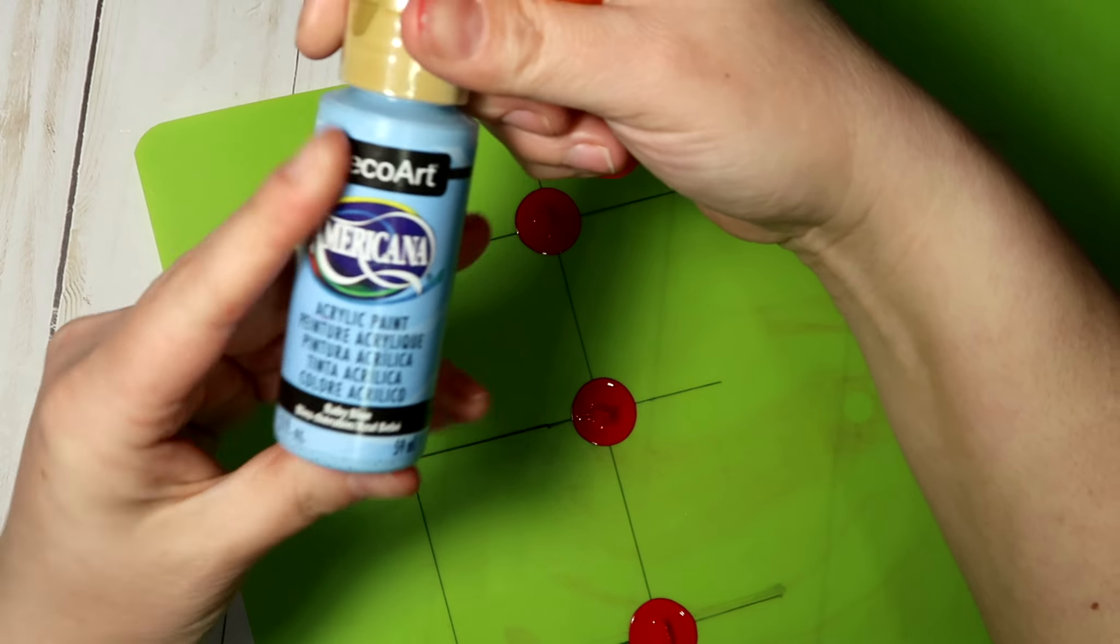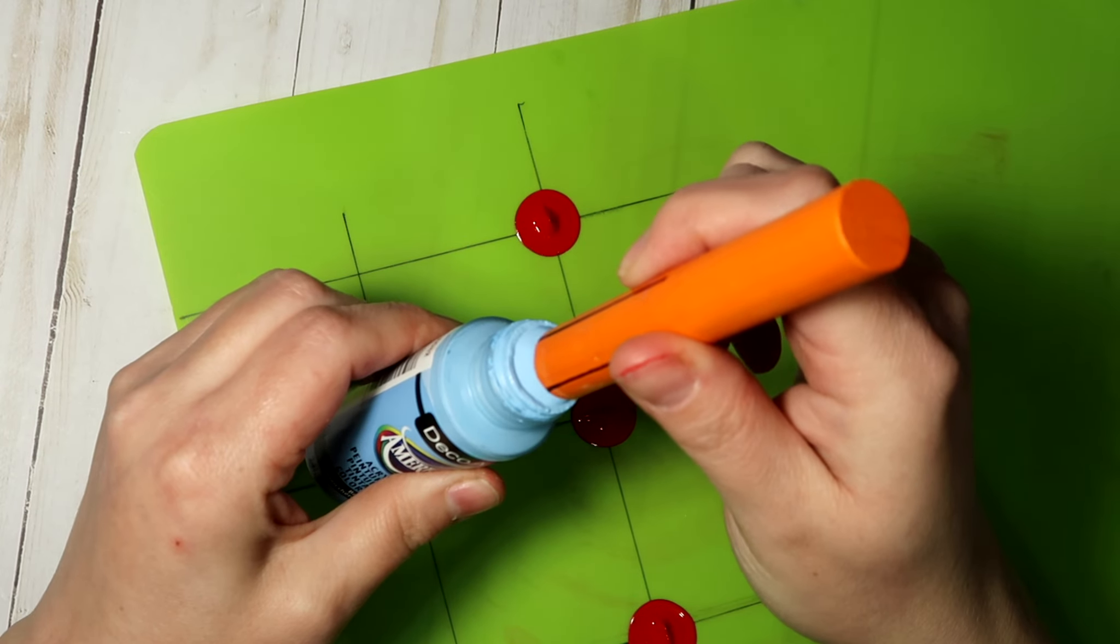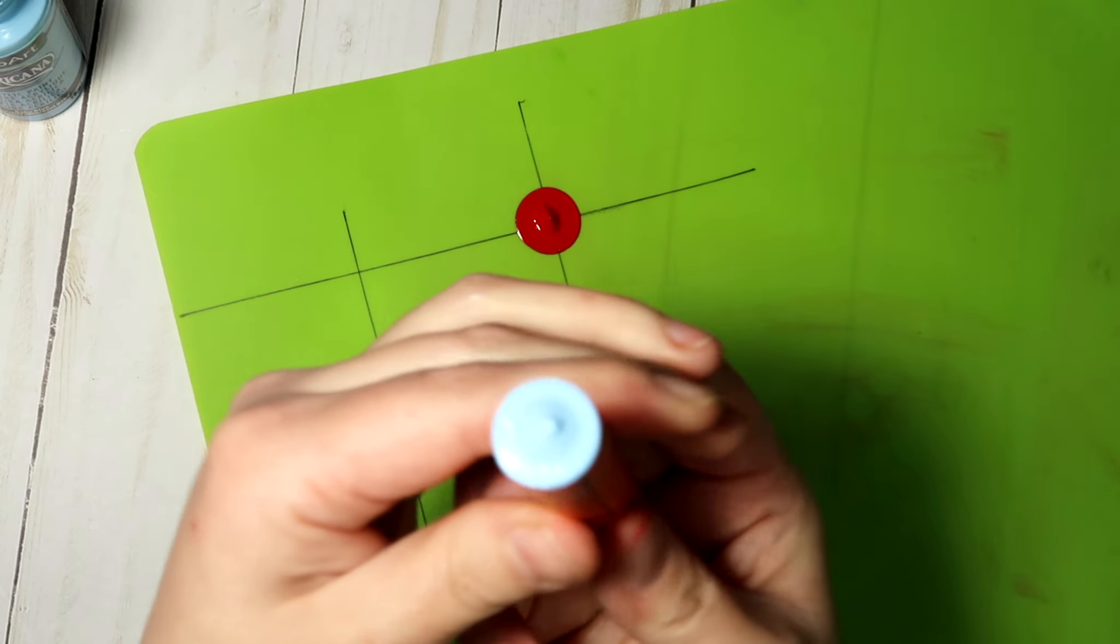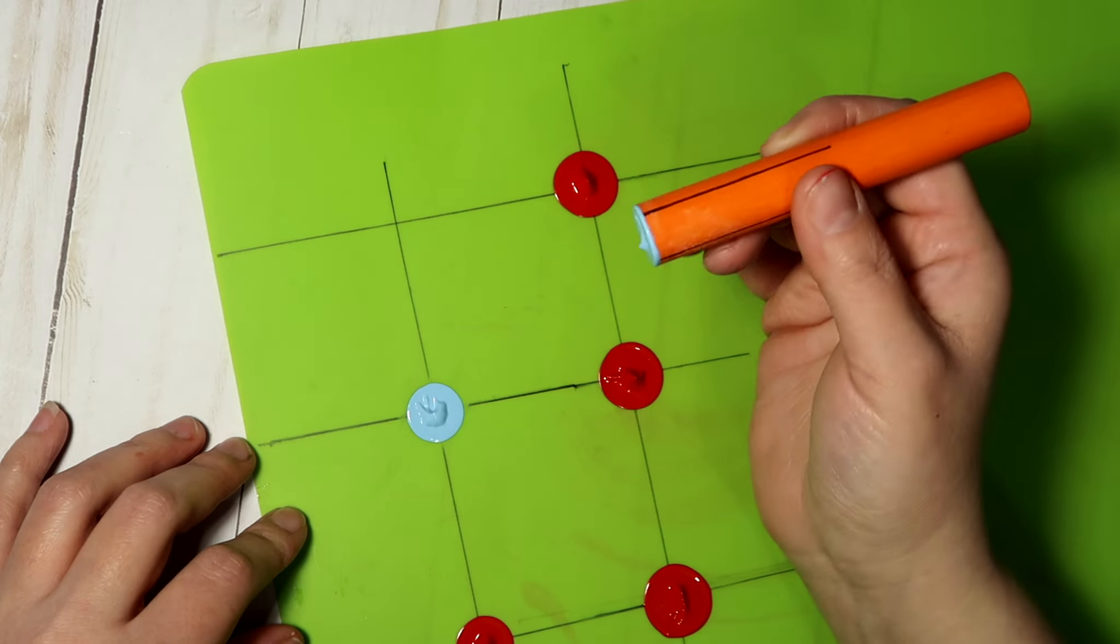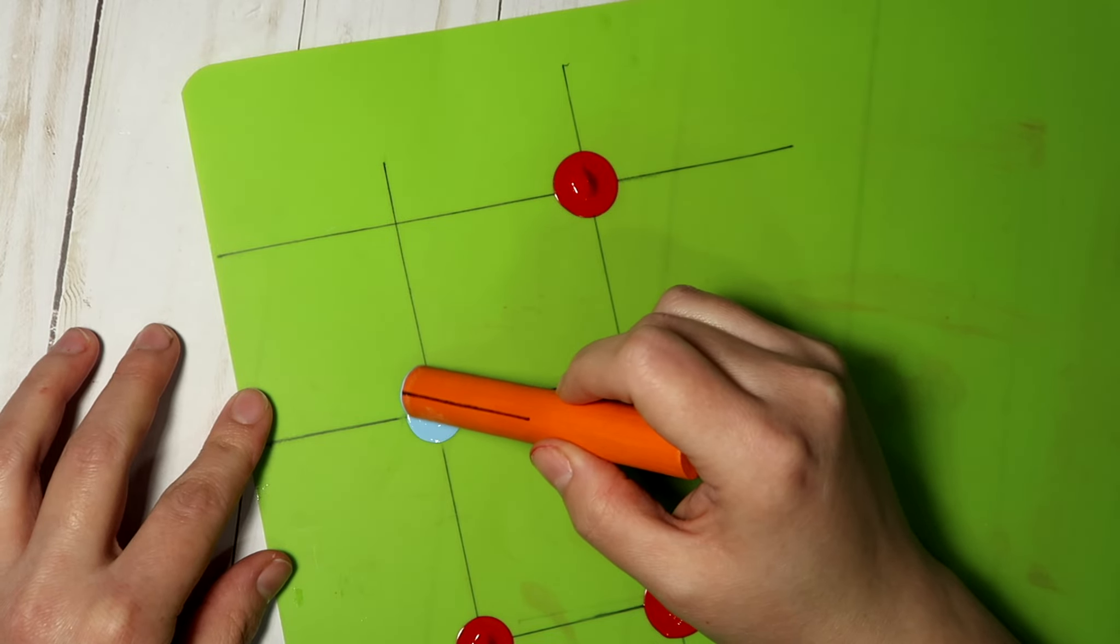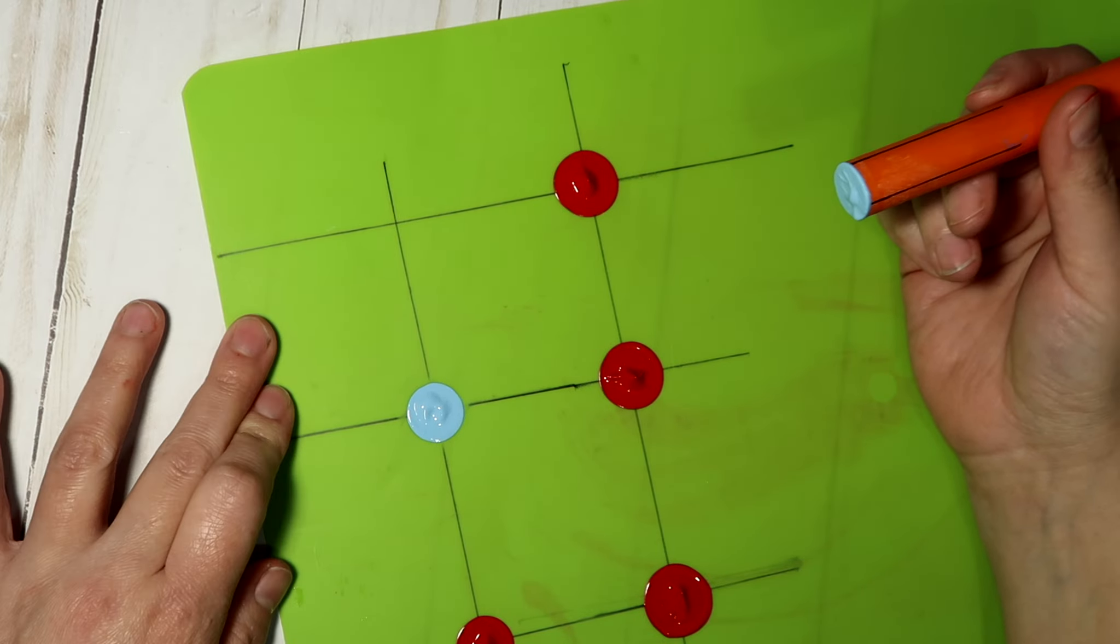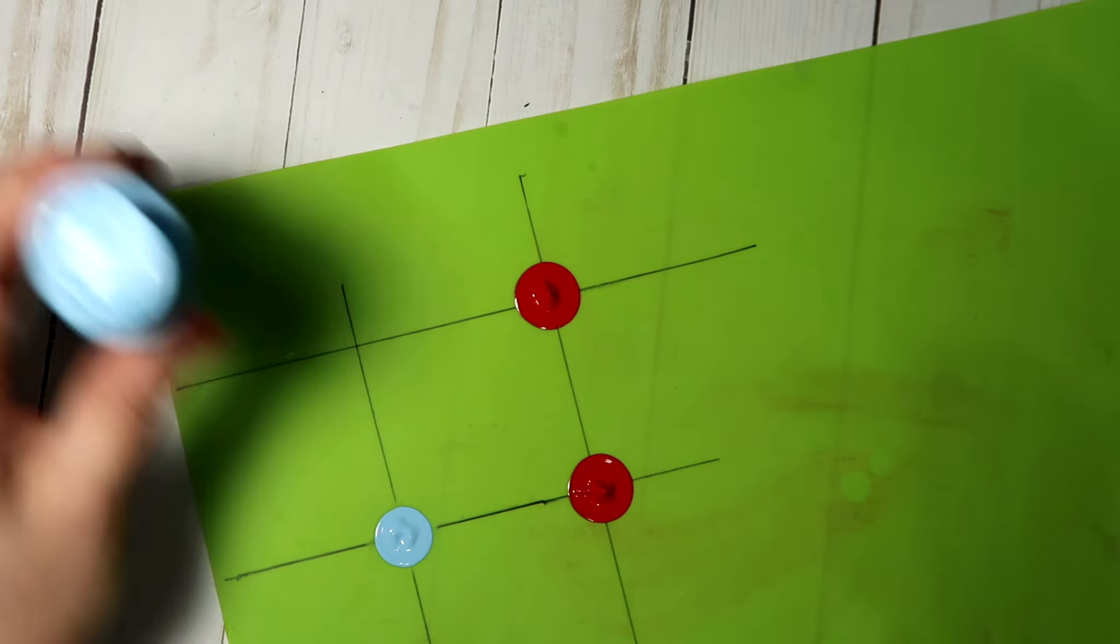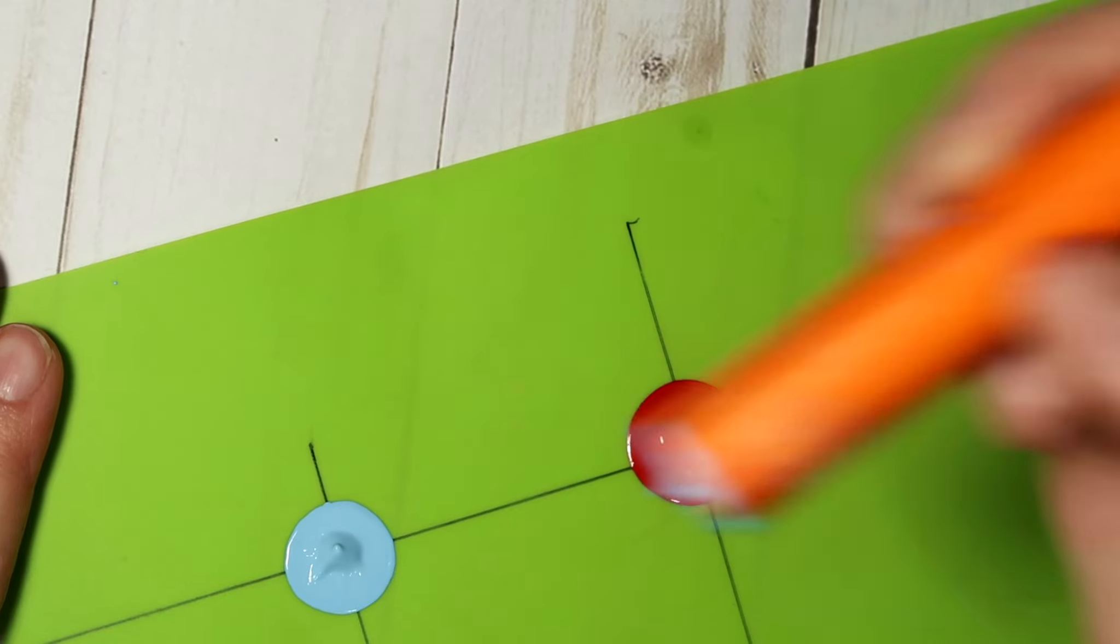All right. So let's try this paint. So I'm going to go ahead and coat the bottom. It's good and coated. You want it good and coated. And there it is. Right in the middle. All right. Let's try the next one.